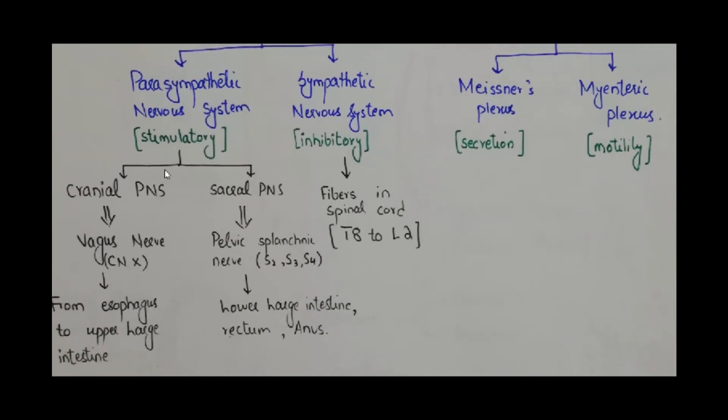Further going into some details of the parasympathetic and sympathetic nervous system, parasympathetic nervous system's stimulatory effect is controlled by cranial and sacral parts. The cranial part constitutes vagus nerve, which supplies from esophagus to the upper large intestine, whereas the sacral part is constituted by the pelvic splanchnic nerve root value S2, S3, and S4.